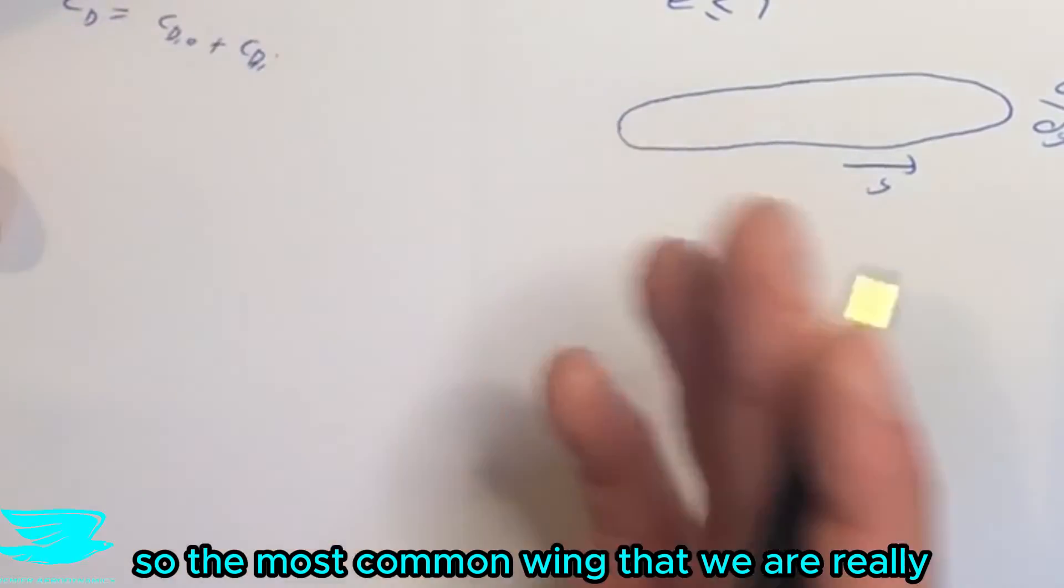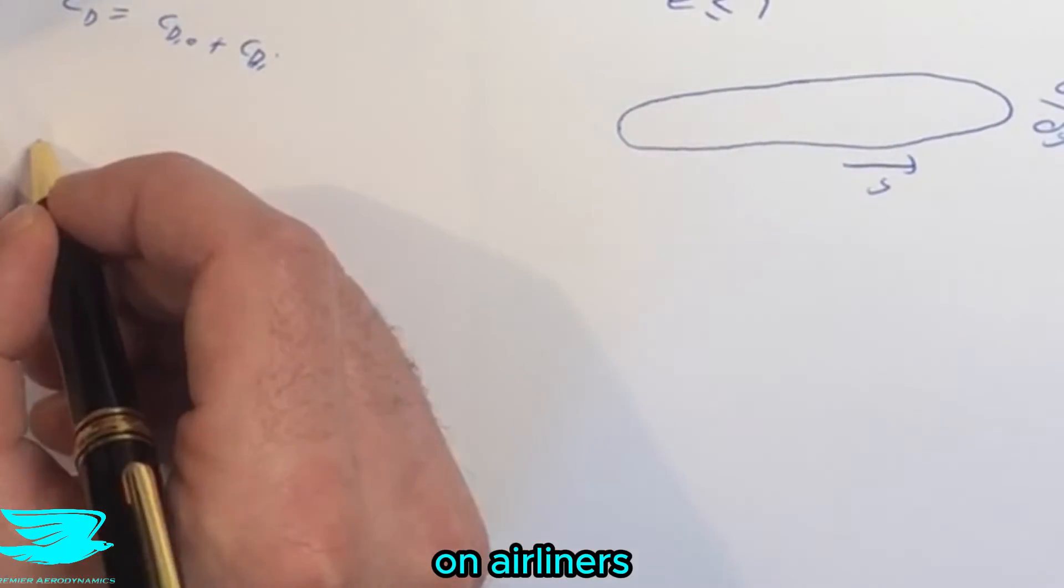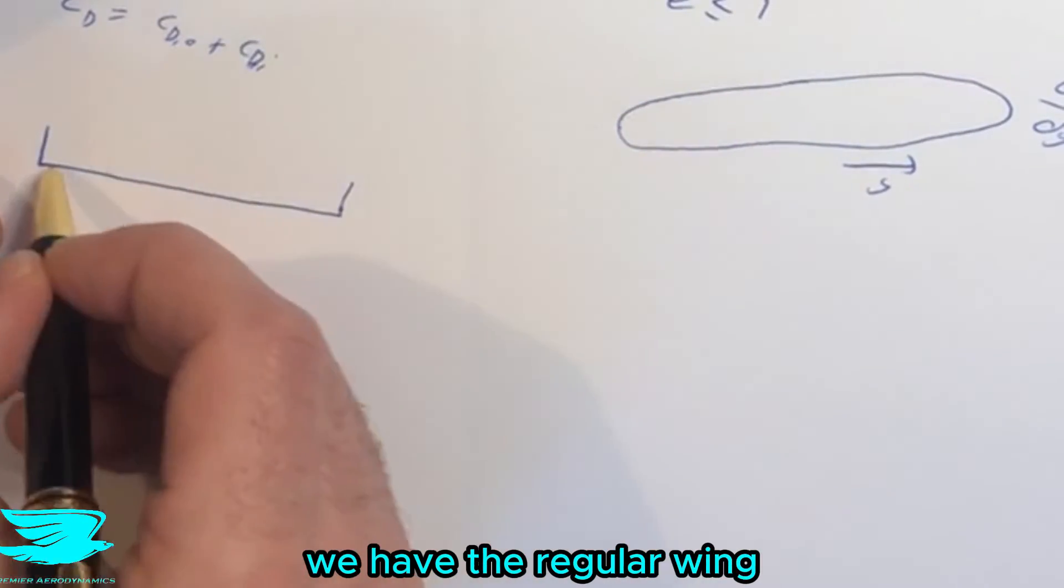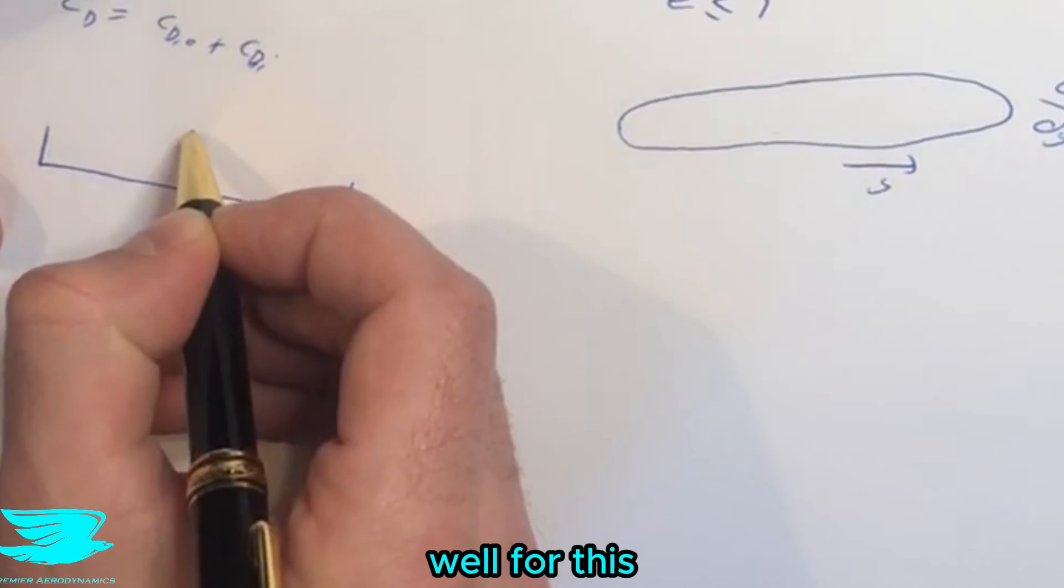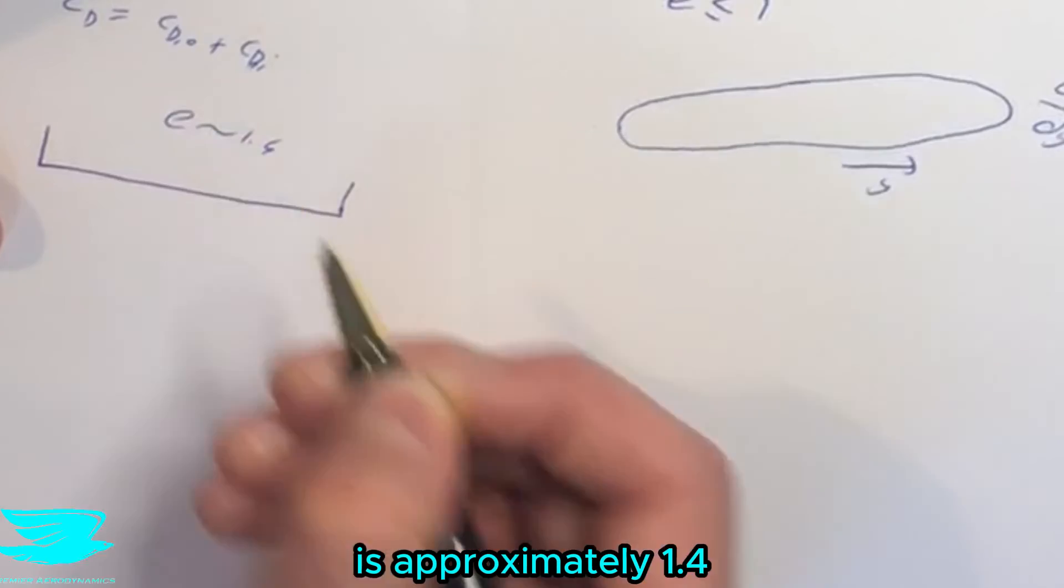So the most common wing that we are really seeing these days on airplanes, on airliners, is one that has wing tips. So if we look at it from the front or the back, we have the regular wing. And then these little wing tips that just pop up. Well, for this planform, this wing, E is approximately 1.4.